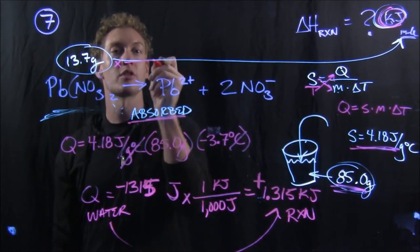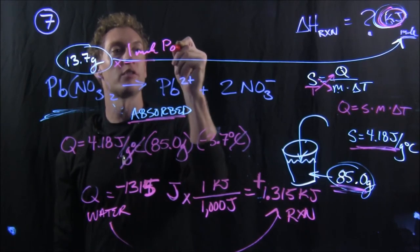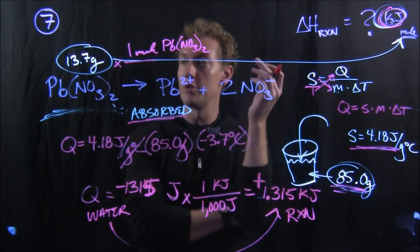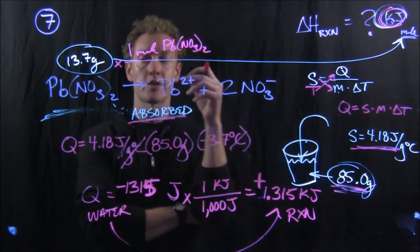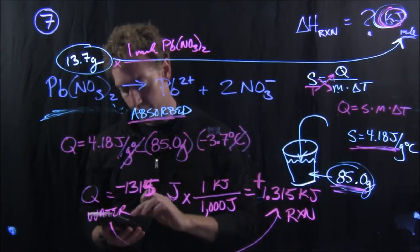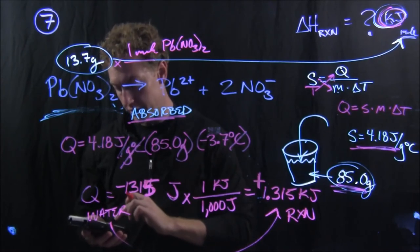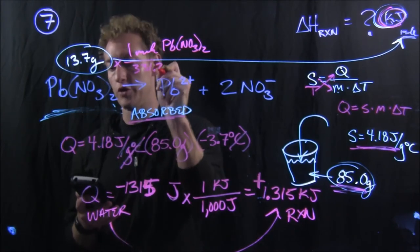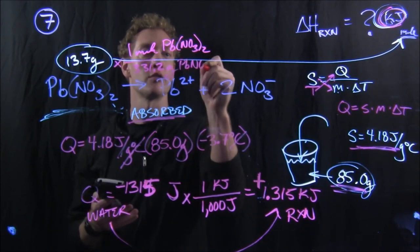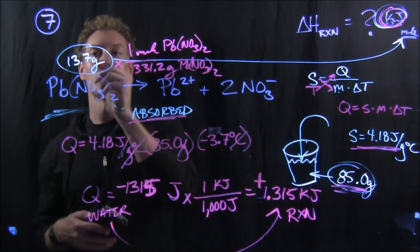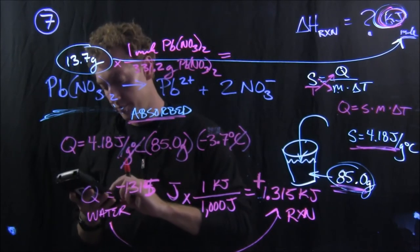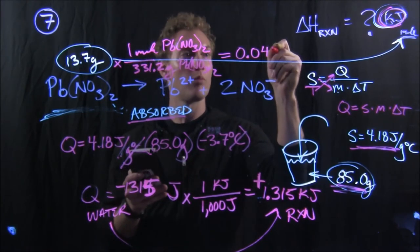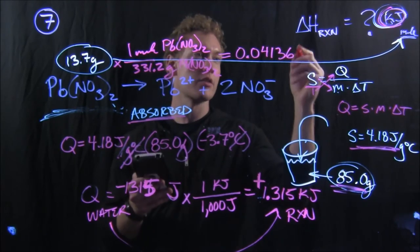We still have 13.7 grams of reactant. So I need to times 1 mole of lead two nitrate for every - so lead is 207.2, nitrate is like 62 grams and there's two of them. So that'd be 62 plus 62 plus 207.2. And so we're looking at 331.2 grams of lead two nitrate per mole. So 13.7, that's going to equal 0.04136 moles.